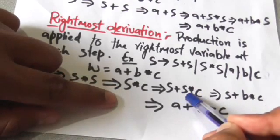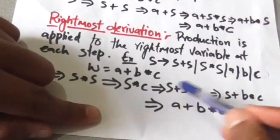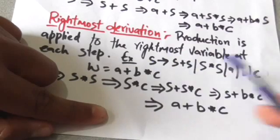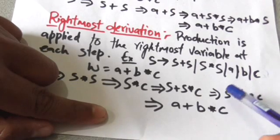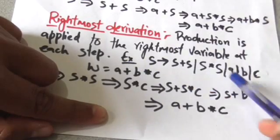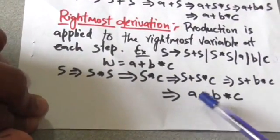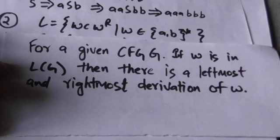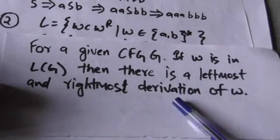Again I have two options: apply the production rule to the first S or the second S. Since this is the rightmost derivation, I will apply the production rule to the rightmost S. I have applied S derives b, so this S is replaced by b. Then I have applied the production rule S derives a, so this S is replaced by a. This is the rightmost derivation of the string a plus b into c. For a given context-free grammar G, if there is a string of terminals W in the language of grammar G, then there is a leftmost and rightmost derivation of W.